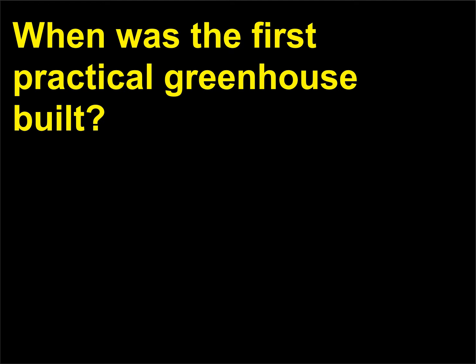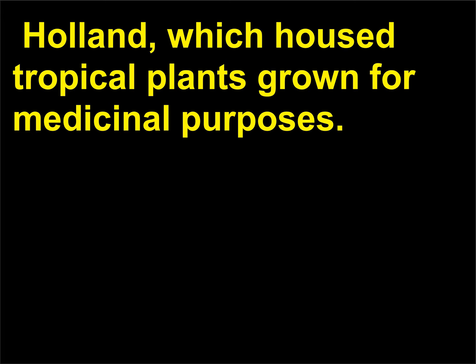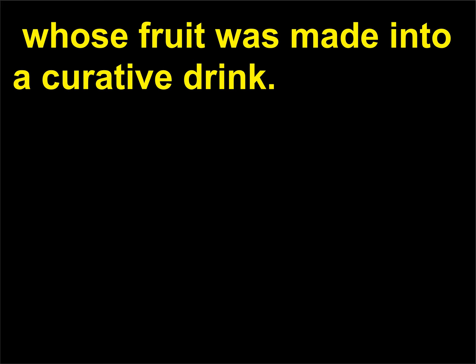When was the first practical greenhouse built? French botanist Jules Charles constructed one in 1599 in Leiden, Holland, which housed tropical plants grown for medicinal purposes. The most popular plant there was an Indian date called the tamarind, whose fruit was made into a curative drink.